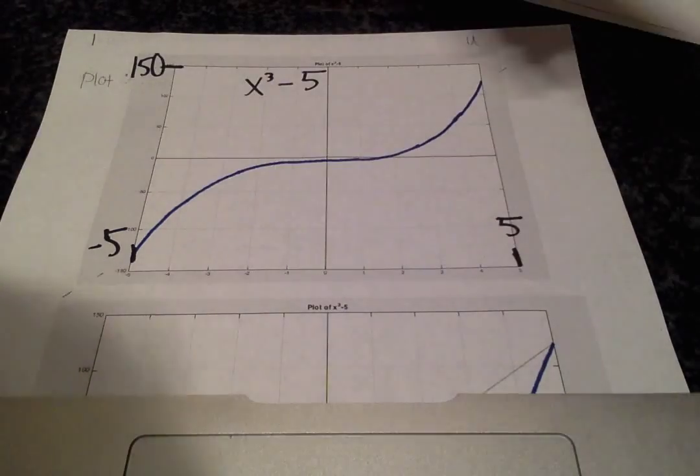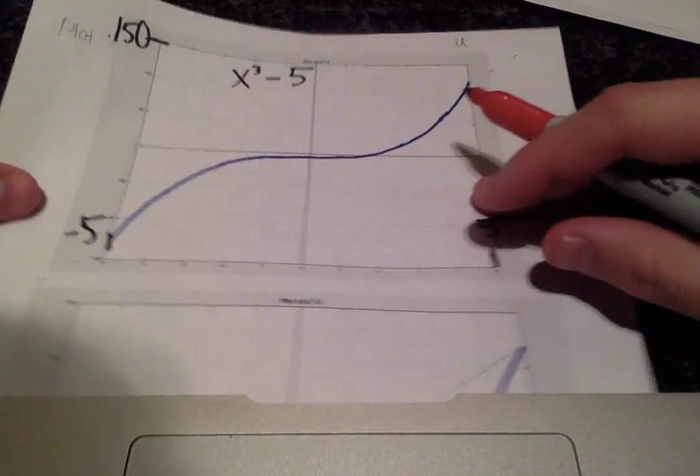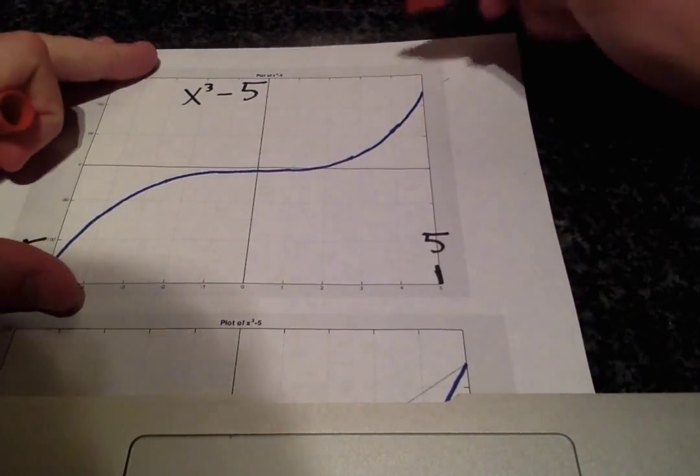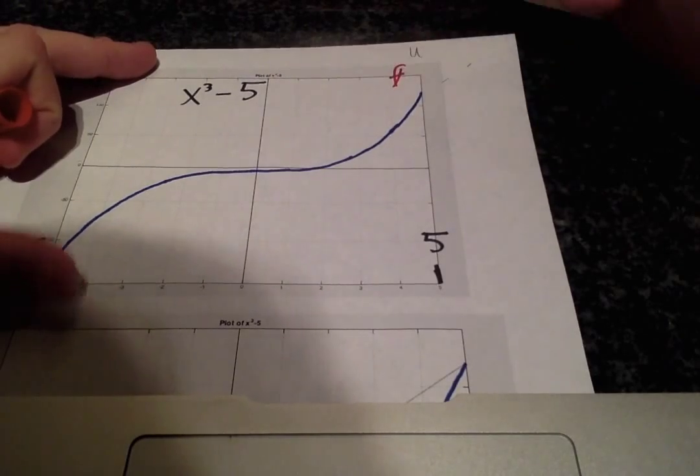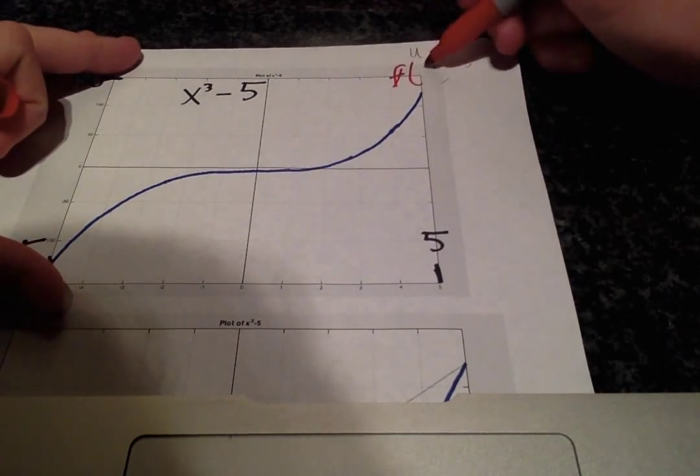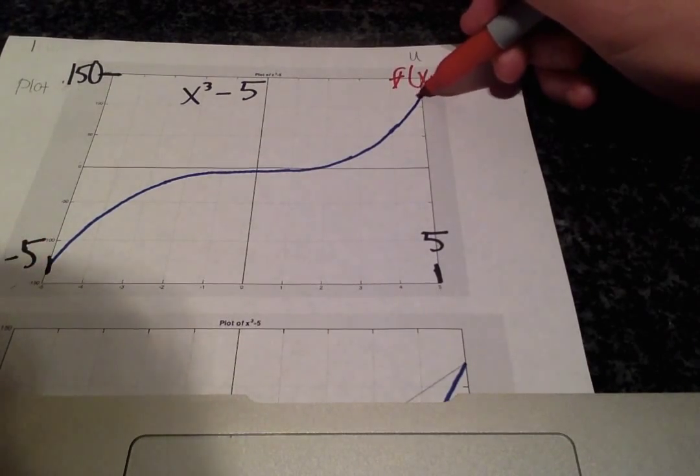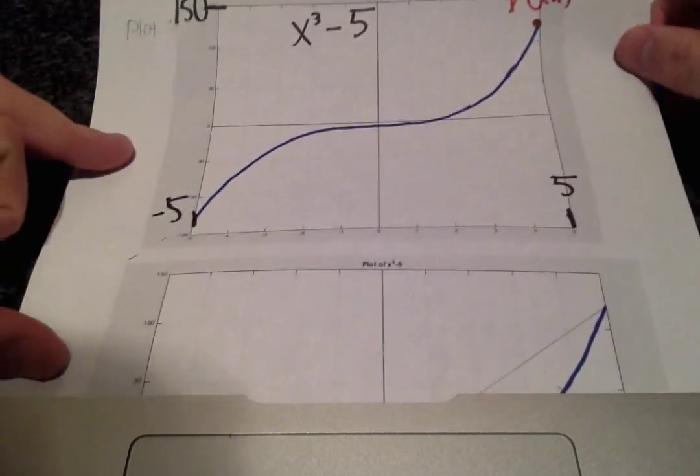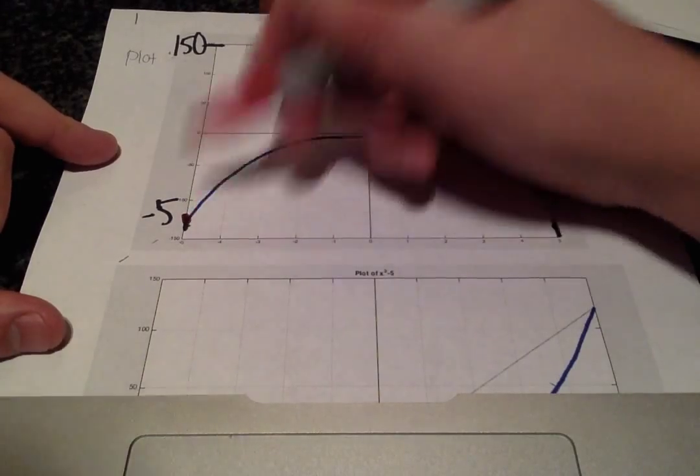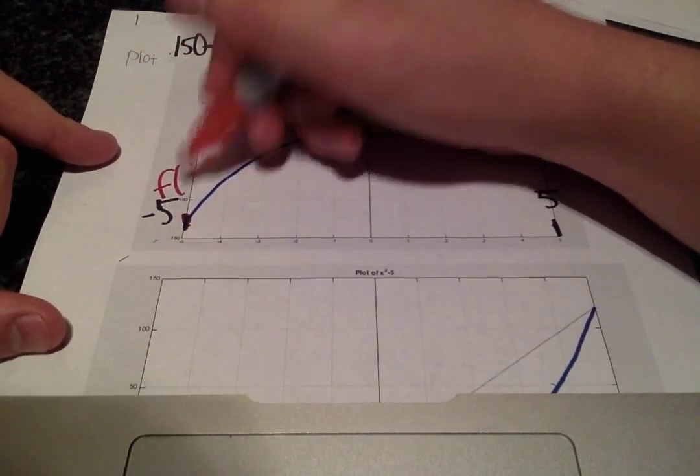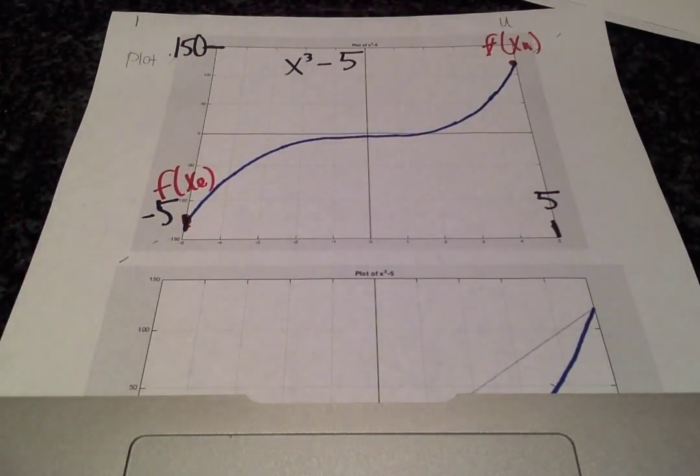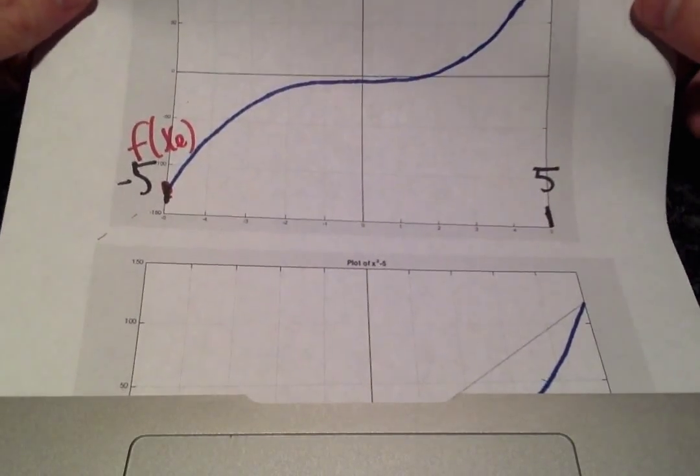So the false position method, what that does is it takes your upper limit f of x_u, it evaluates that point, and it also evaluates the lower limit f of x_l. So it evaluates both the lower and upper limit.